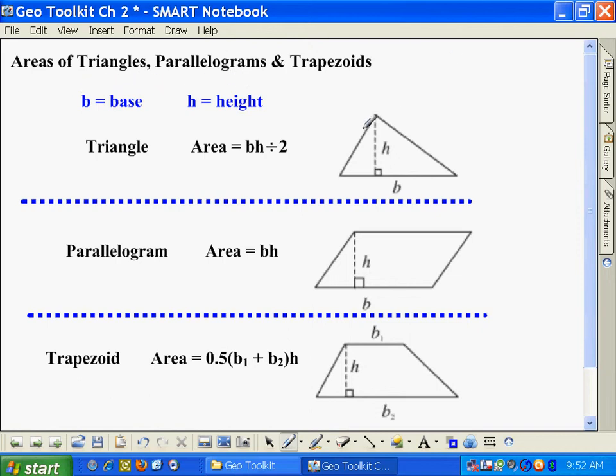For a triangle, the base is the bottom, and the height is a right angle from the base straight up to the highest point of the figure.